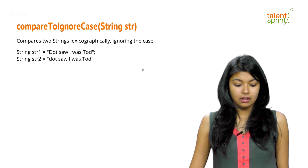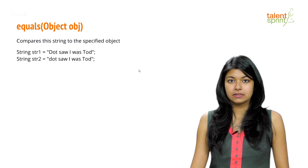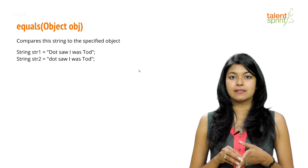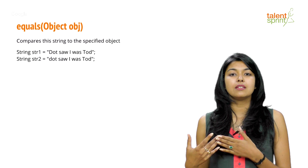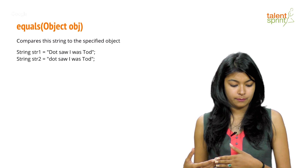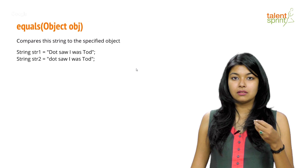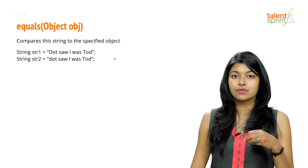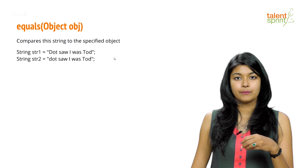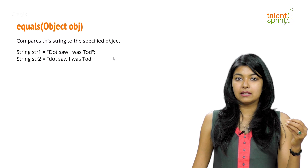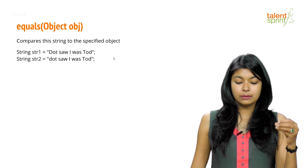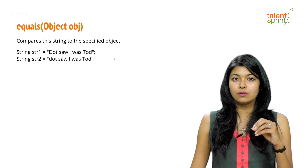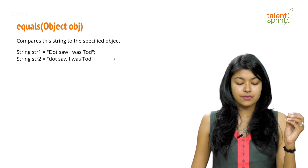Moving on — 'equals()' takes your string object as input parameter, compares the first string to the other, and tells you whether the two strings are equal or not. Similarly, like 'compareTo()', 'equals()' also has an 'equalsIgnoreCase()' variant which ignores the case of your strings during comparison.